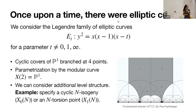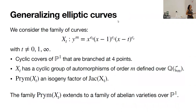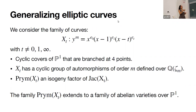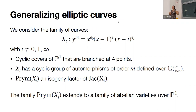We can consider additional level of structure in these elliptic curves by considering curves like X_0(n) or X_1(n). If we want to generalize this story, we can think about curves that look just like our Legendre curves but with varying exponents — considering y^n equals the same factors but with exponents t_0, e_1, and e_t. Again, these are curves with a parameter t different from 0, 1, and infinity. They are cyclic covers of P¹ branched at four points.